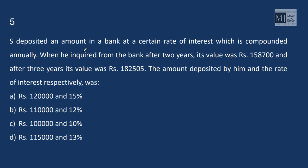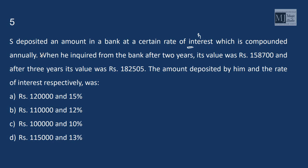S deposited an amount in a bank at a certain rate, which is compounded annually. When he inquired from the bank after 2 years, its value was 158,700 and after 3 years, its value was 182,505. You know that P into 1 plus I to the power 3 upon P into 1 plus I to the power 2 would be 182,505 by 158,700. This calculator value would be 1.15.